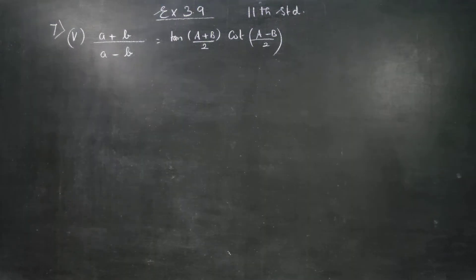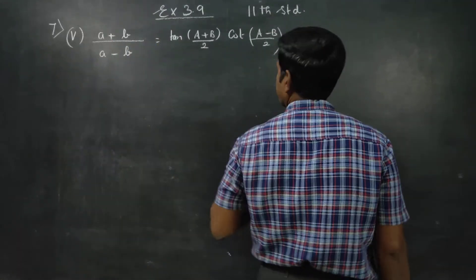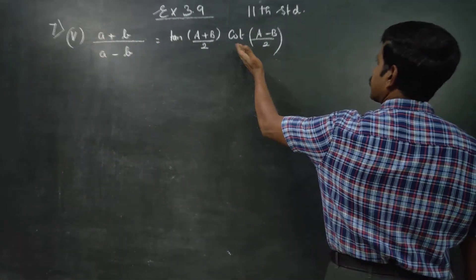Dear 11th standard students, in exercise number 3.9, sum number 7, 5th subdivision, we have to prove (a+b)/(a-b) is equal to tan and cot.